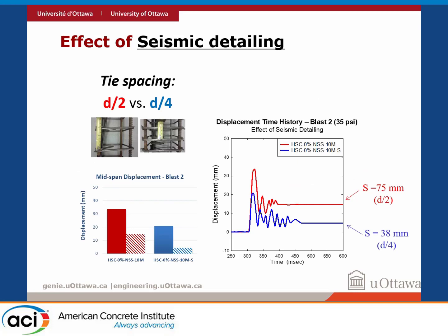Another parameter we know affects blast performance is transverse reinforcement detailing. We know it improves seismic behavior, and research has shown it improves blast behavior too. Comparing a column with D/2 spacing versus one with D/4 spacing — the seismic detailing — you can see it improves column behavior: maximum displacement goes down, residual displacement goes down, and if you looked at the photos, there's less damage in the seismically detailed column.